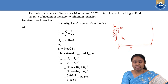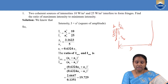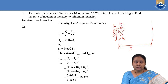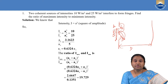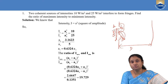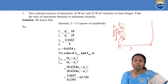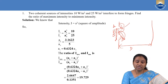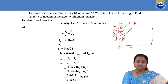Division of wavefront takes place and the spherical wavefront gets divided into two parts by making them go through these two slits which are kept very close to the source. That is why S1 and S2 will act as virtual coherent sources.